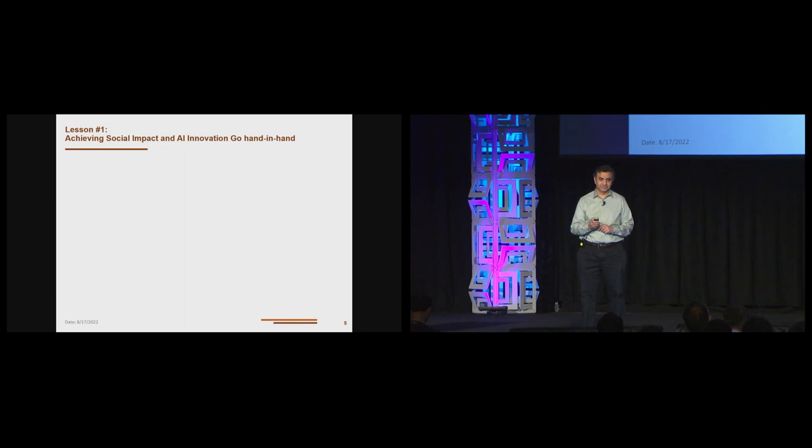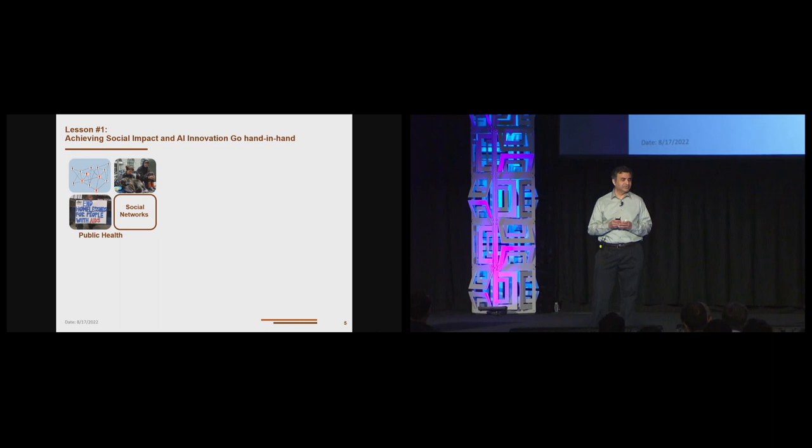Let's take the example of public health. We have large populations to serve, limited number of public health resources. A concrete example is work we have done with youth experiencing homelessness in Los Angeles. Harnessing the social networks of these youth, we are able to show that our influence maximization algorithms are far more effective in reducing HIV risk behaviors compared to traditional approaches. However, this work requires innovation in the area of influence maximization because the social networks are actually not known in advance.